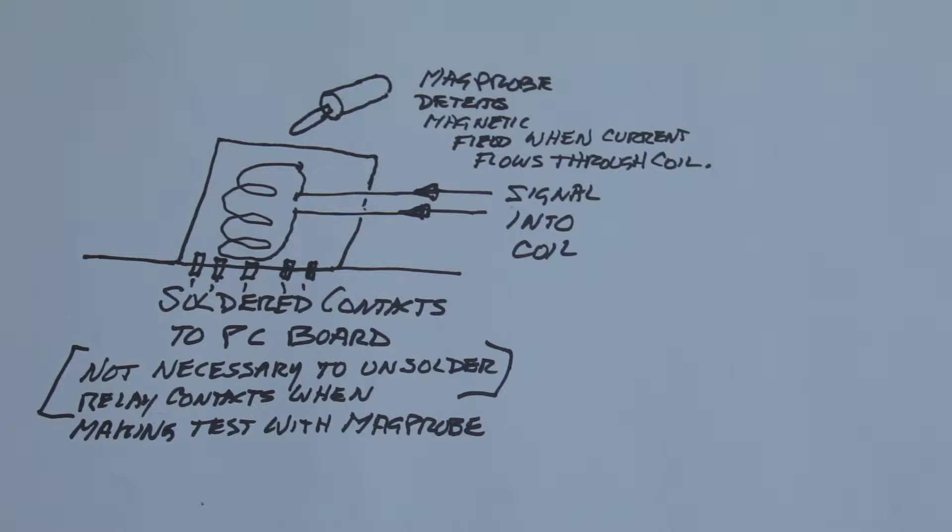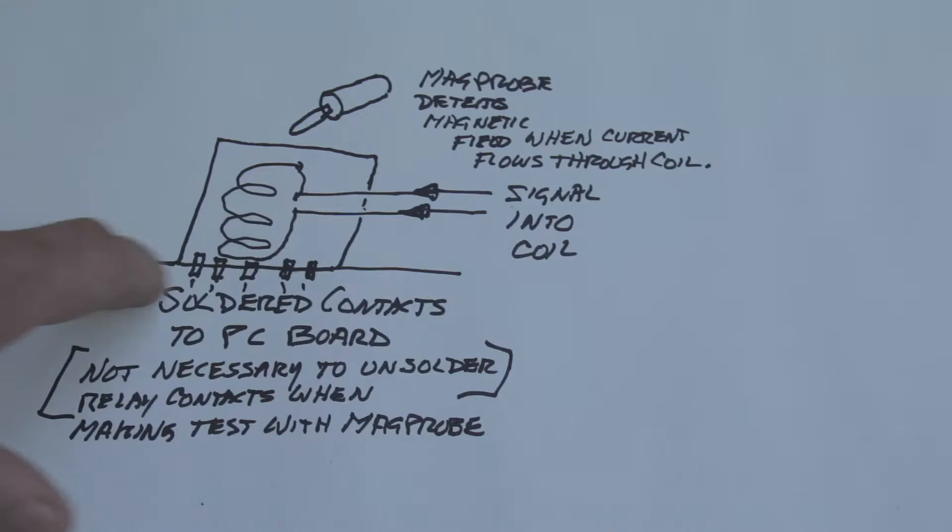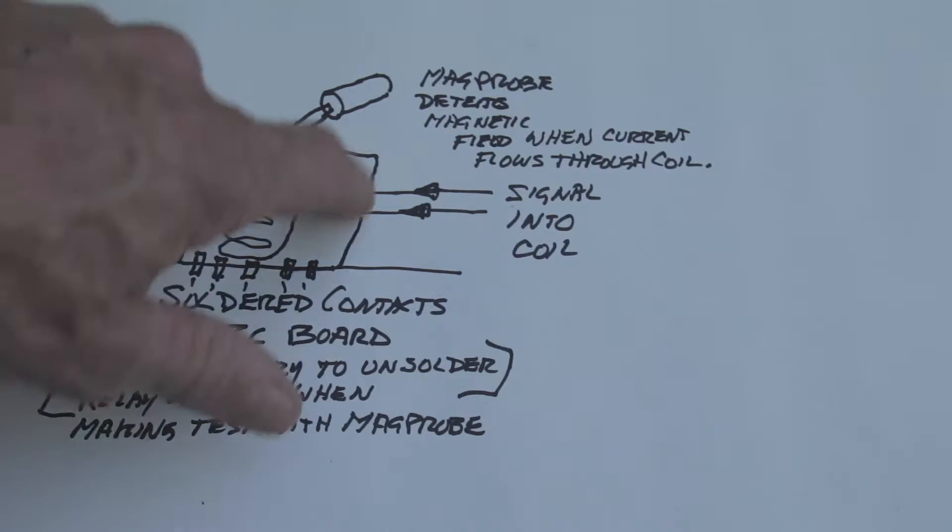What we have here is a diagram of a PC board. These little squares right here represent the soldered contact points that are holding the relay onto the board.